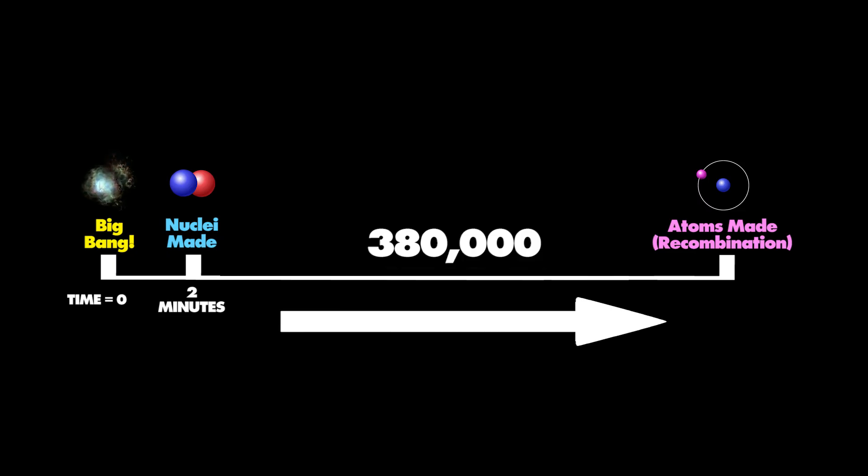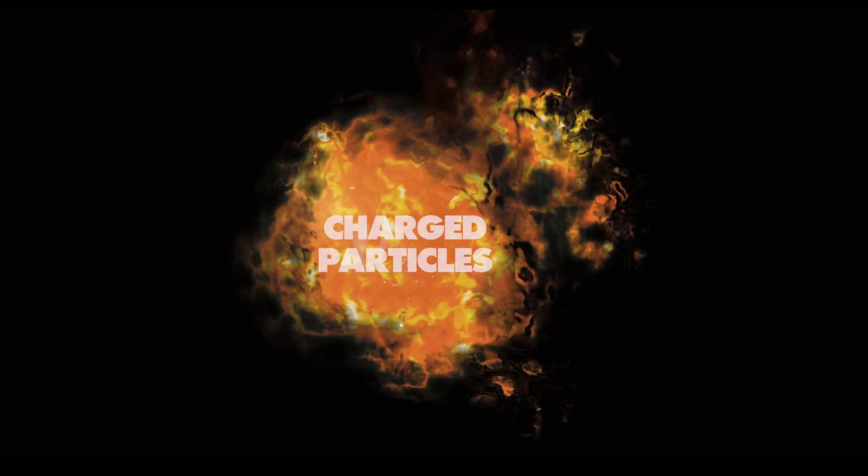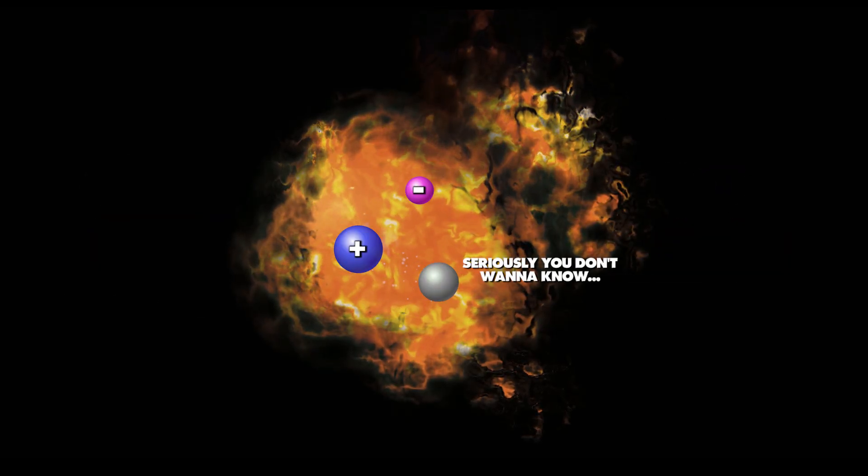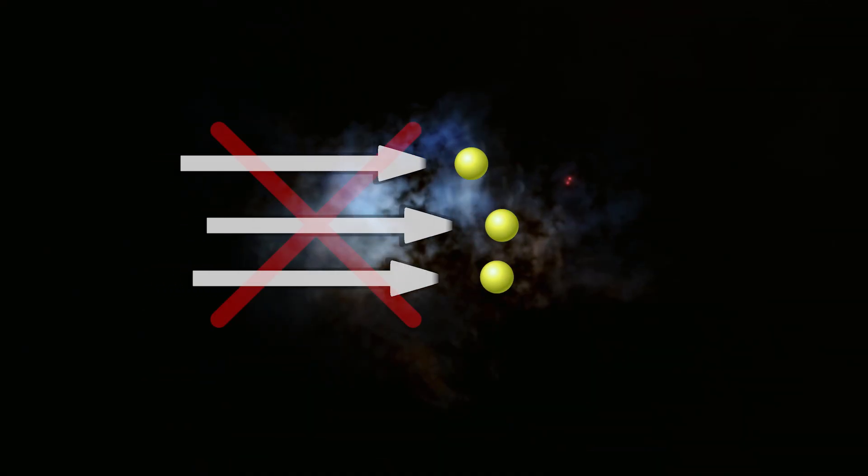Am I too late? In this 380,000-ish year gap before we made the first atoms, the universe was just a seething mess of charged particles with electrons and protons and a few other things that we haven't mentioned floating about. This means light or photon particles would have had a lot of trouble passing through the universe at this point.